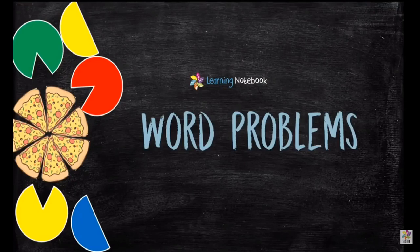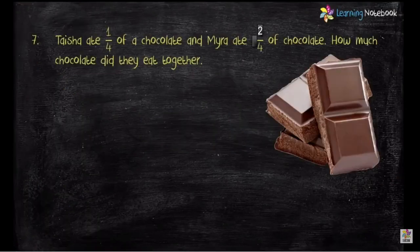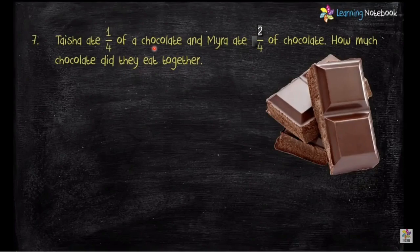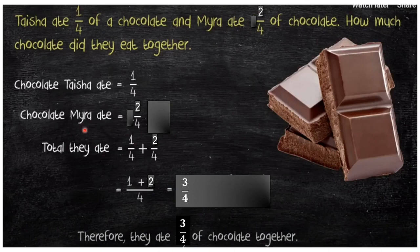Now for word problems — real life examples. In the first example: Taisha ate 1 by 4 of a chocolate and Myra ate 2 by 4 of a chocolate. How much chocolate did they eat together? The keyword 'together' means we add. So total chocolate is 1 by 4 plus 2 by 4: adding numerators, 1 plus 2 equals 3, so they ate 3 by 4 of chocolate together.